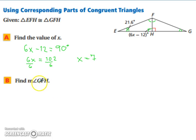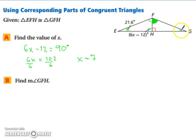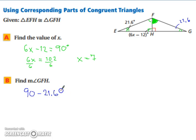Now let's find the measure of angle GFH. We know that this angle will be congruent to the corresponding one, and since angle E is congruent to angle G, we can label that angle as 21.6 degrees. Since we have a 90-degree angle, the other two angles must sum to 90. So we have 90 minus 21.6, which gives us 68.4 degrees.